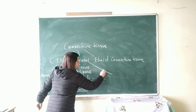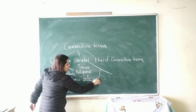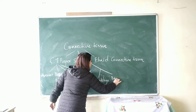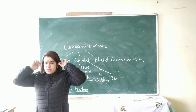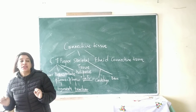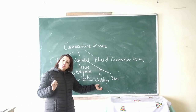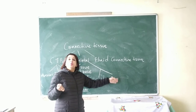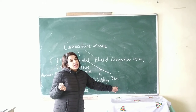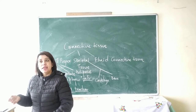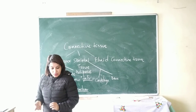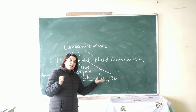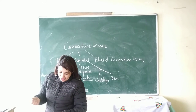Next we come to the skeletal tissue, which is of two types: cartilage and bone. If you touch the tip of your nose or your ears, those are made up of cartilage — they are softer than bones and are elastic. Cartilage helps in protecting the bones from mechanical shocks and injuries. Bones, on the other hand, are hard and non-elastic, and give support to our body.